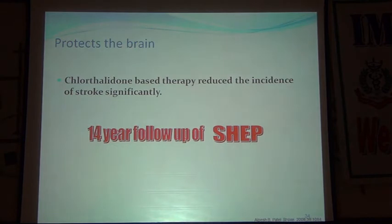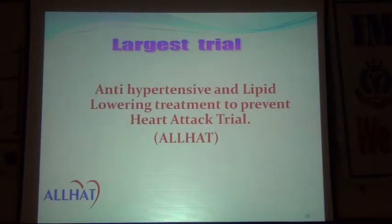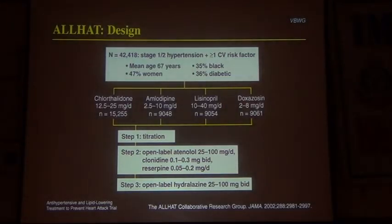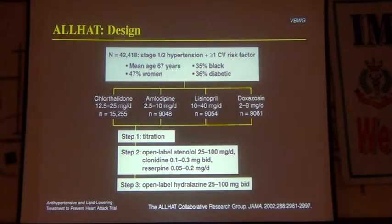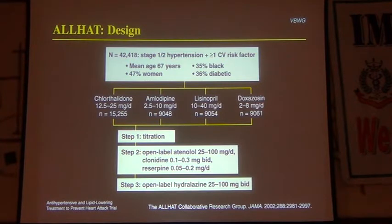The SHEP study was followed up for 14 years and found that the incidence of stroke was significantly reduced with chlorthalidone. The ALLHAT trial — Antihypertensive and Lipid-Lowering Treatment to Prevent Heart Attack Trial — included a huge population of 42,400 patients divided into four groups: chlorthalidone, amlodipine, lisinopril, and doxazosin. Doxazosin was withdrawn due to lack of efficacy.